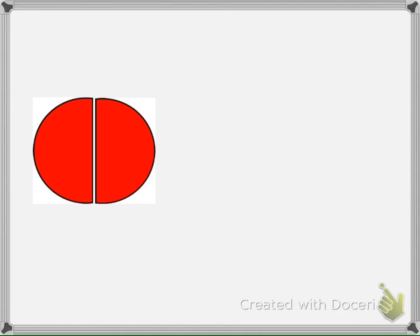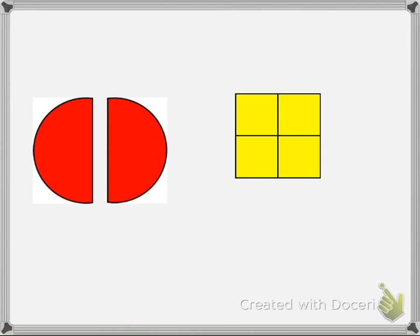One part of this divided circle equals one half, one part out of two equal parts. The square is divided into four equal parts, so we say the square is divided into fourths. One part of this square equals one-fourth, one part out of four equal parts.